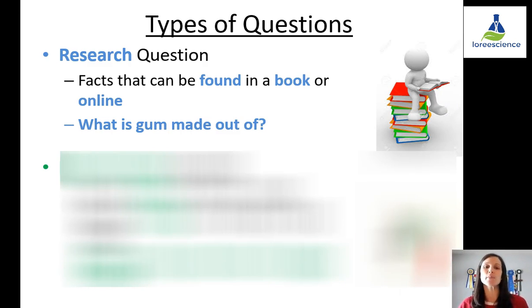There are two major types of questions. The first is known as a research question. This type of question can be answered pretty simply and there are facts that can be found in a book or online, such as what is gum made out of? You could put that into Google, up would pop the answer and you'd be done. You have answered your question.